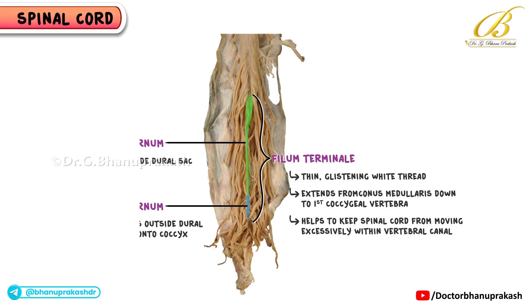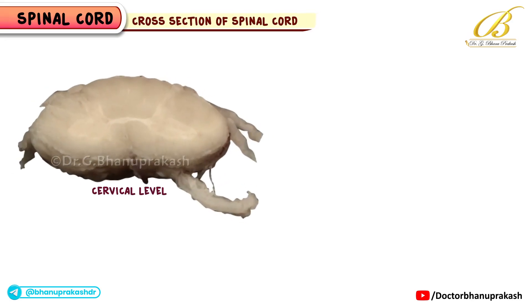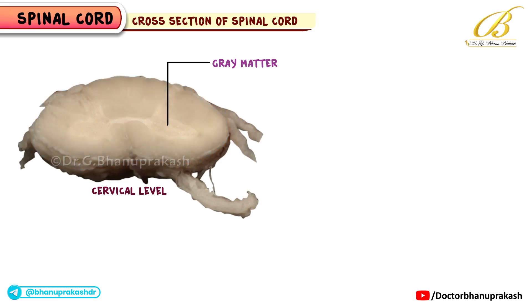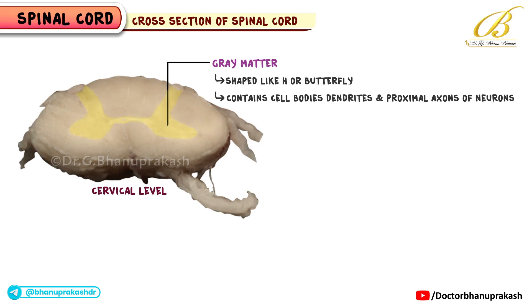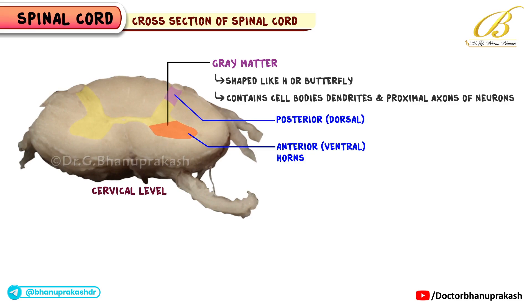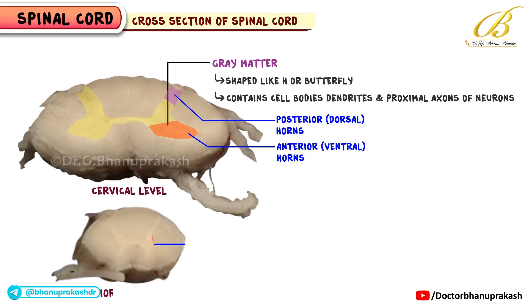When we look at the spinal cord in cross-section, we can distinguish gray matter in the center and white matter on the outside. Gray matter, shaped like an H or a butterfly, contains the cell bodies, dendrites, and proximal axons of neurons. It's divided into anterior (ventral) horns, posterior (dorsal) horns, and in some regions, lateral horns (T1 to L2).